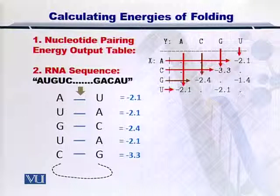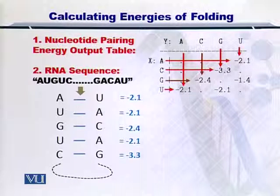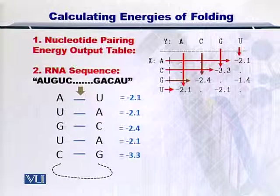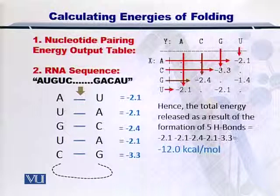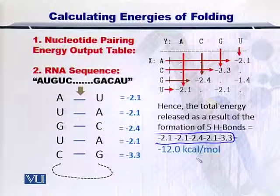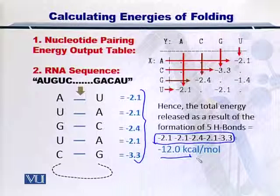And at the end, you can see that we have the values for the energies given out as a result of bond formation between each complementary nucleotide. Now, to calculate the net energy given out as a result of this entire folding process, we simply add them up. Upon addition of all these energy values, we find that minus 12 kilocalories has been given out.